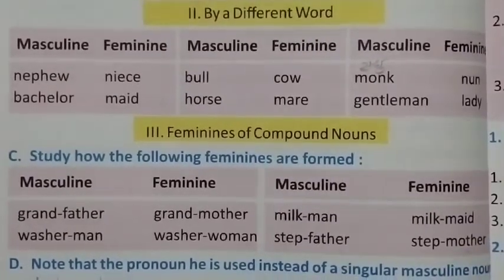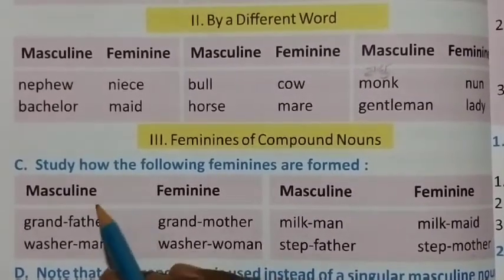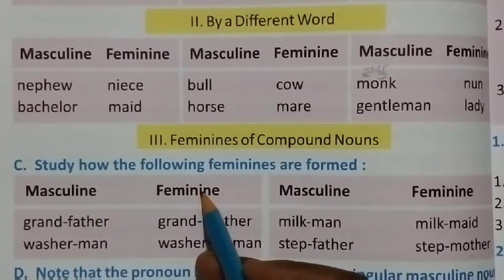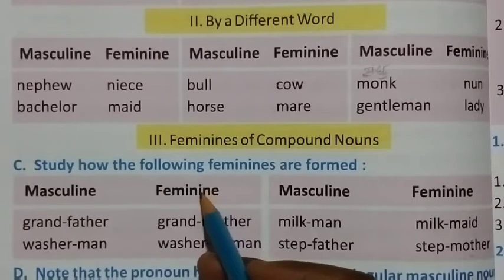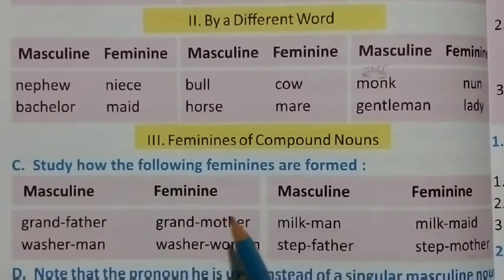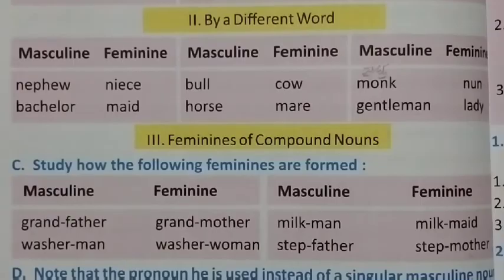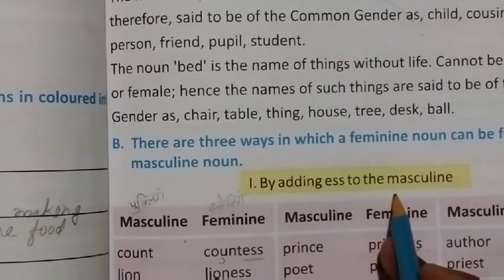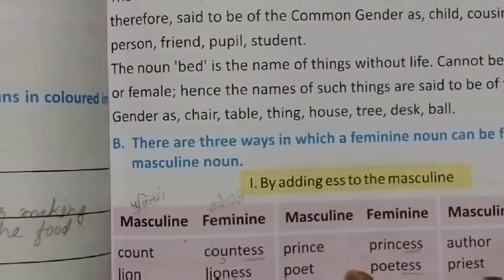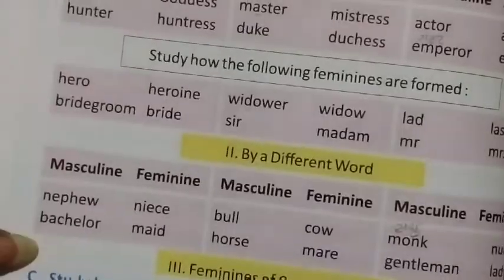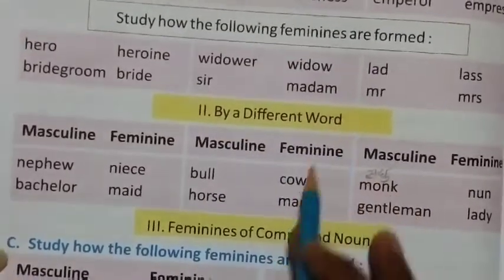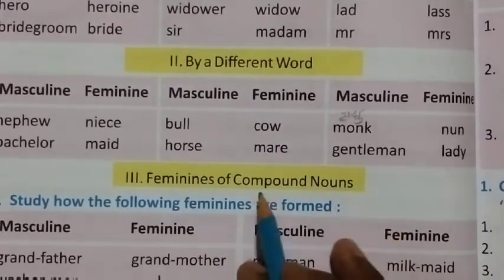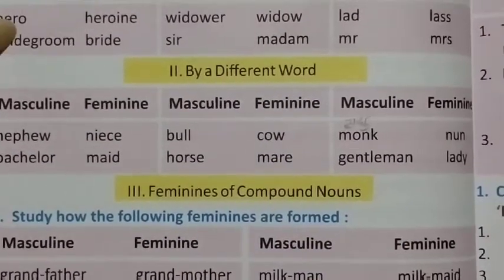So students, you need to learn how masculine gender changes to feminine gender. Remember the three ways: first, by adding '-ess'; second, by using a different word entirely; and third, feminines of compound nouns. Learn all three ways.